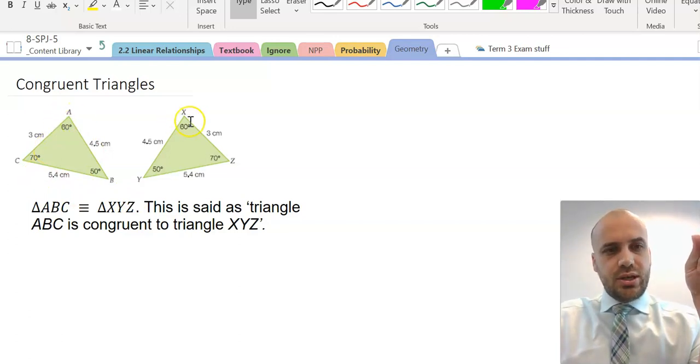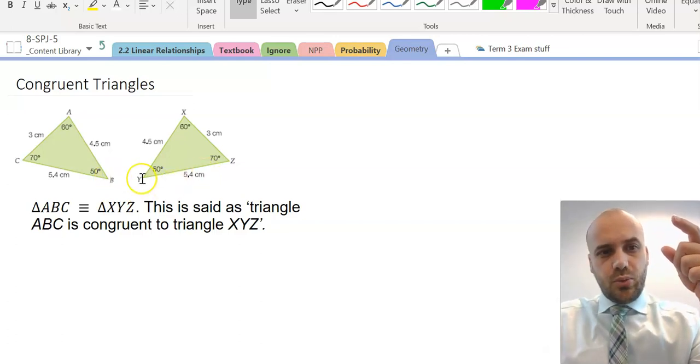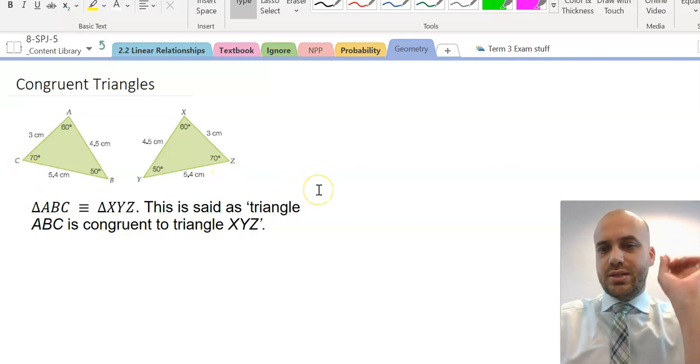So, A is on the 60 degree, X is on the 60 degree, so A and X match up. B and Y match up, 50 and 50, and C and Z match up, 70 and 70.